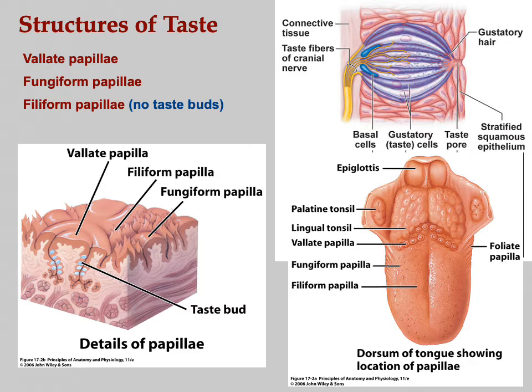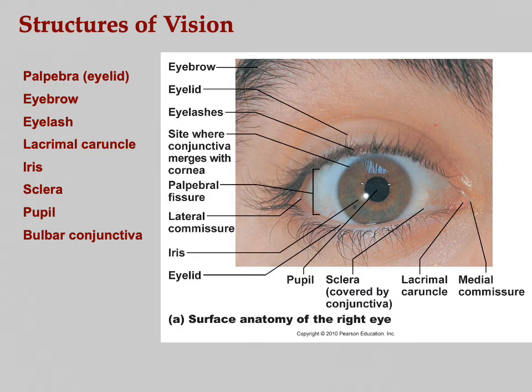Filiform papillae are little tiny ones — they have no taste buds. They're just for texture. You know how a cooked spaghetti noodle and a pretzel feel totally different? It's not just that they taste different — they have a completely different texture. That's what filiform papillae are for: detecting texture.